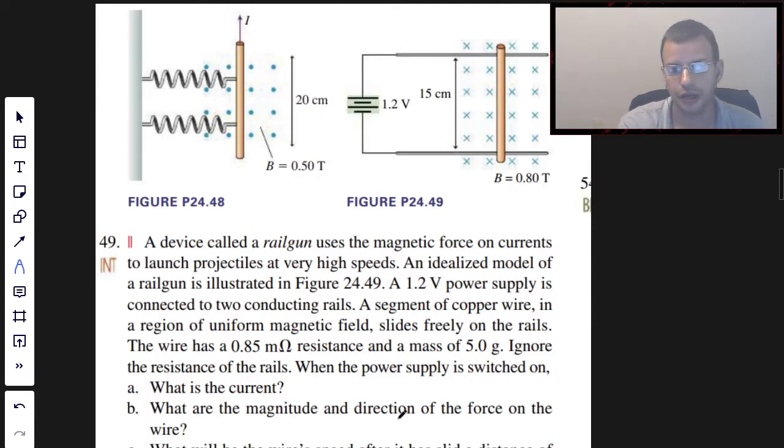The device called a rail gun, and it's a rail gun because this projectile is going to slide across two rails.